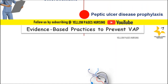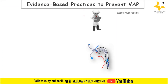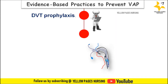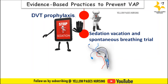Next comes DVT prophylaxis, that is deep vein thrombosis prophylaxis. It remains part of the ventilator bundle in order to prevent other serious complications that could increase the morbidity and mortality of these patients. Commonly applied DVT prophylaxis includes low molecular weight heparin pharmacologically.